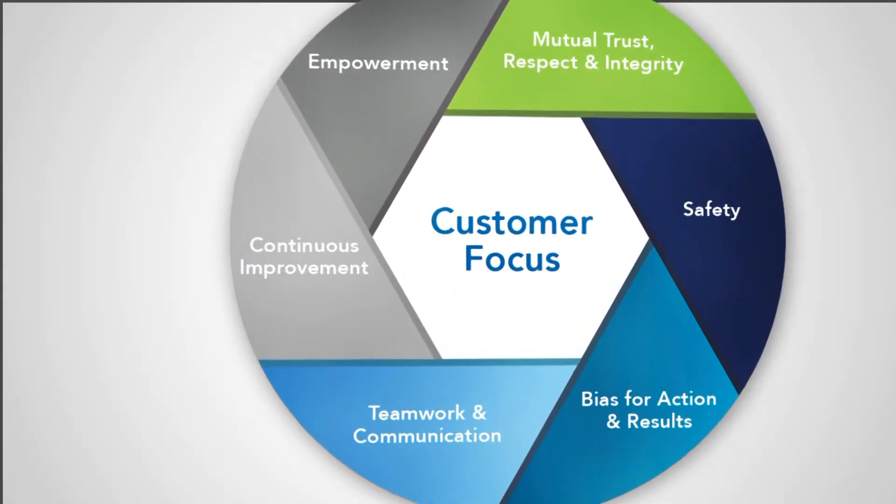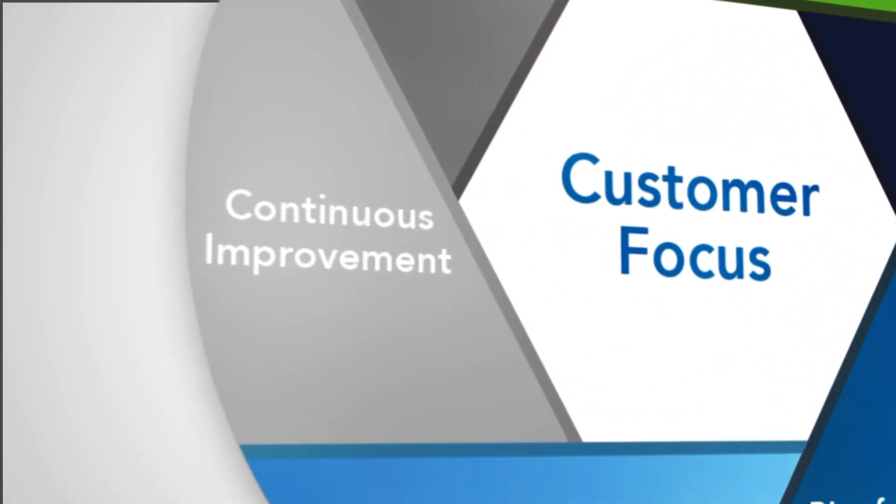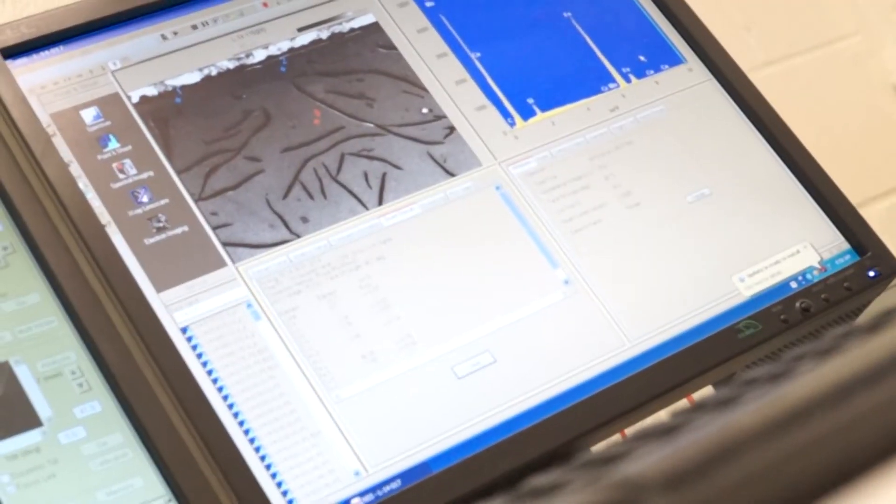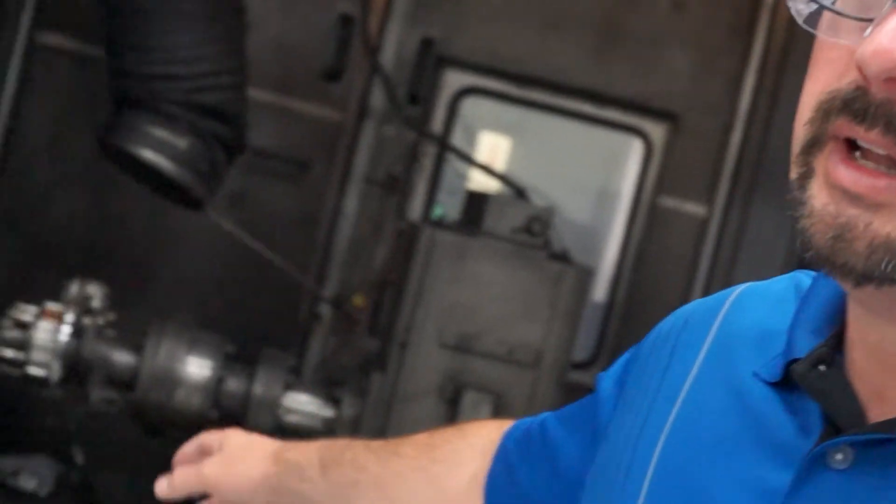Continuous improvement is a value that stems from our continuous improvement culture which is based on our Carlyle operating system. It basically means we have to never be satisfied with our processes and look to continuously improve them.